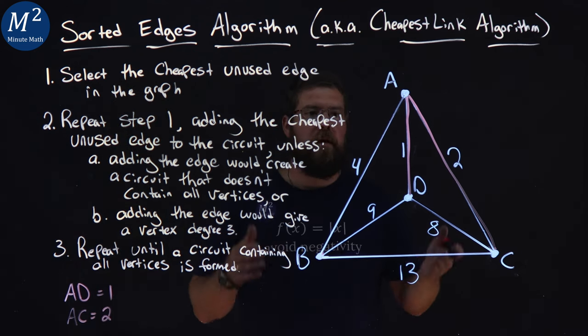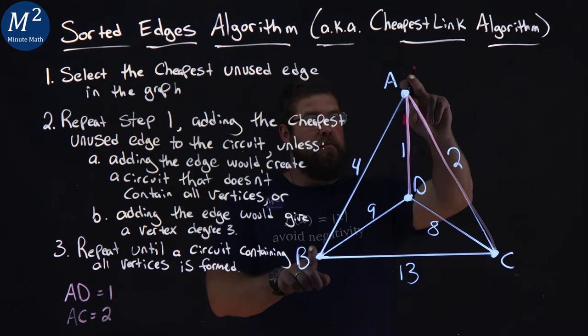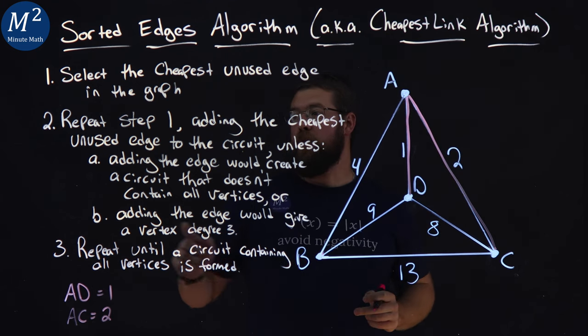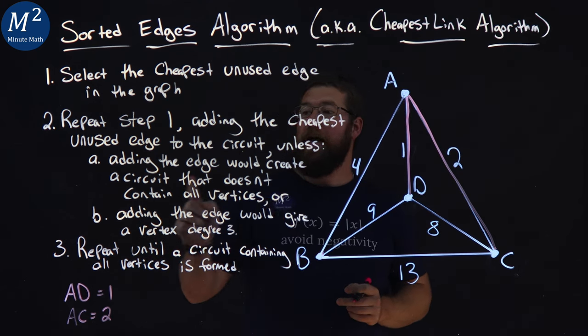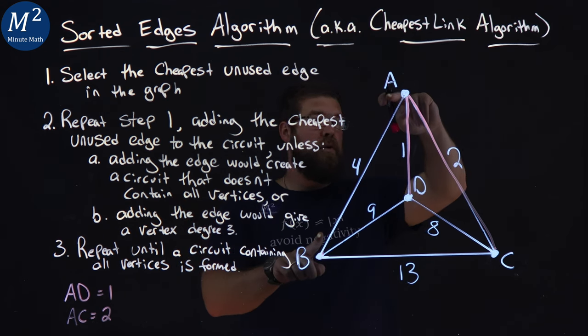Now, repeat again. What is the cheapest unused edge? A to B, that's the weight of four. That's the cheapest one out there. Can we do that with our rules? Adding the edge would create a circuit that doesn't contain all vertices. A to B doesn't create a circuit here. We're good.